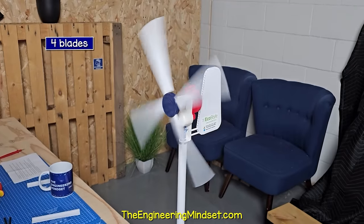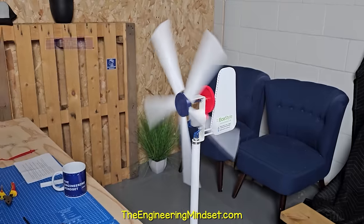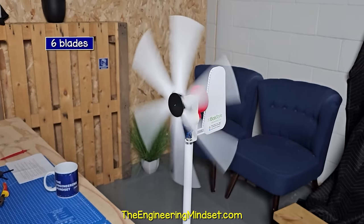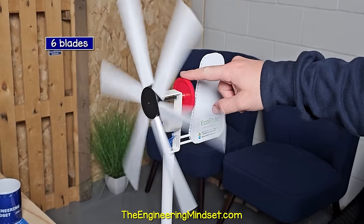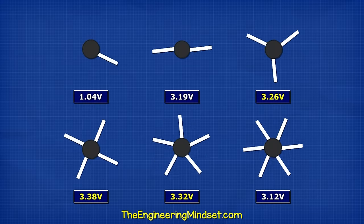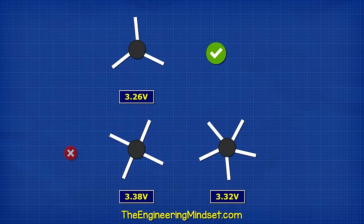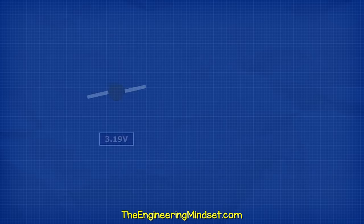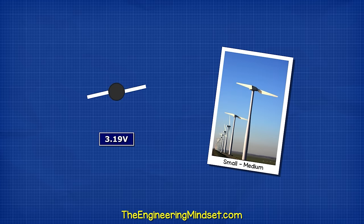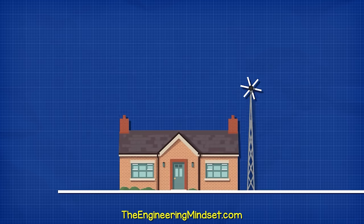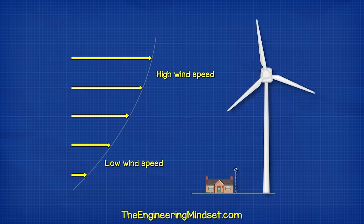With four blades it again produces a slightly higher voltage. But with five blades the voltage has started to drop slightly, and at six blades it produces an even lower voltage but is very hard to stop. So the three, four, and five blade versions produce the most energy. The three-blade version is very stable and costs the least to build, so this is the obvious choice. Two blades is also common in medium-sized turbines because it's cheap and fairly stable. Micro wind turbines might have many blades because they are installed lower, experiencing slower and weaker wind speeds.